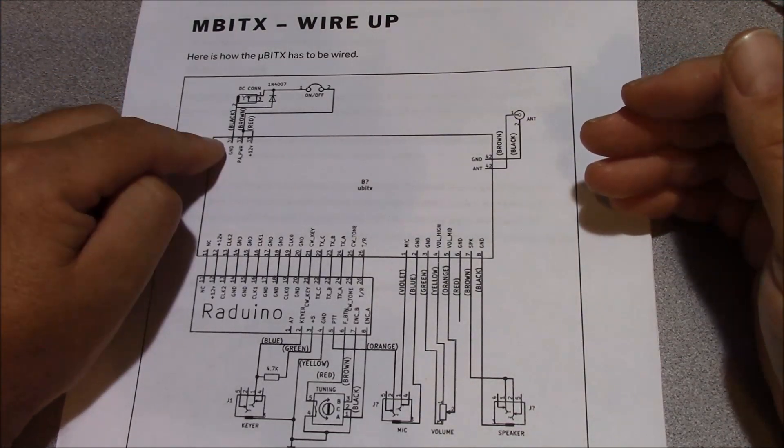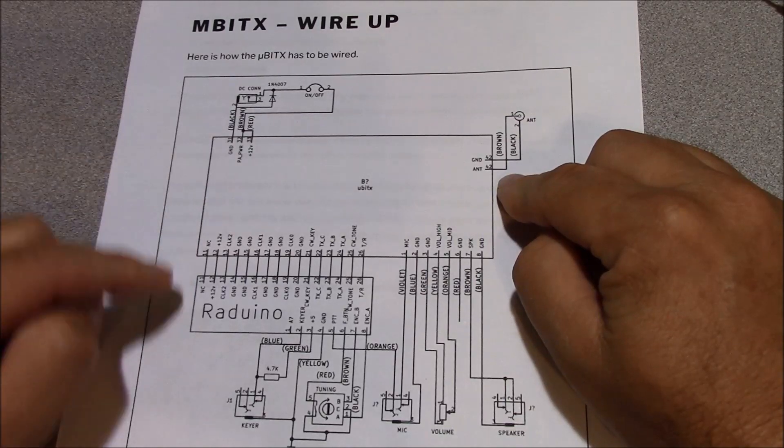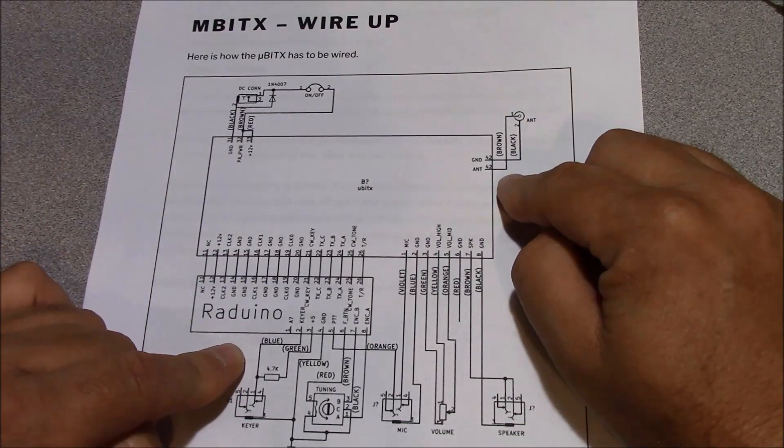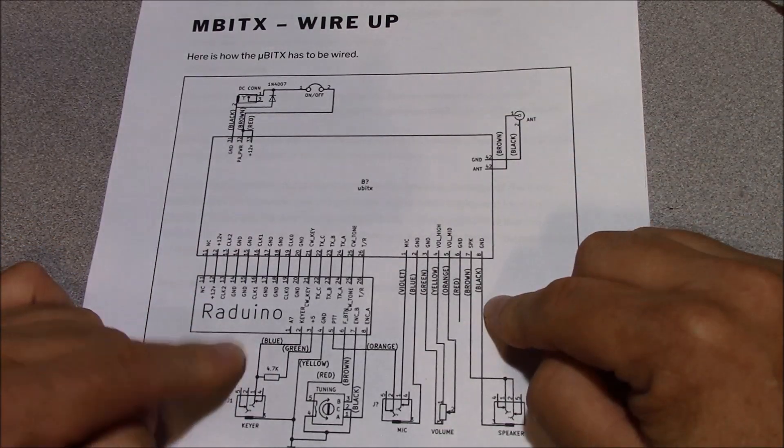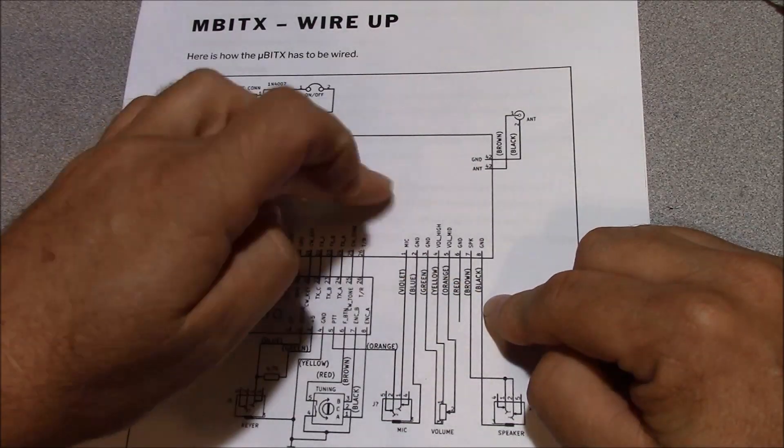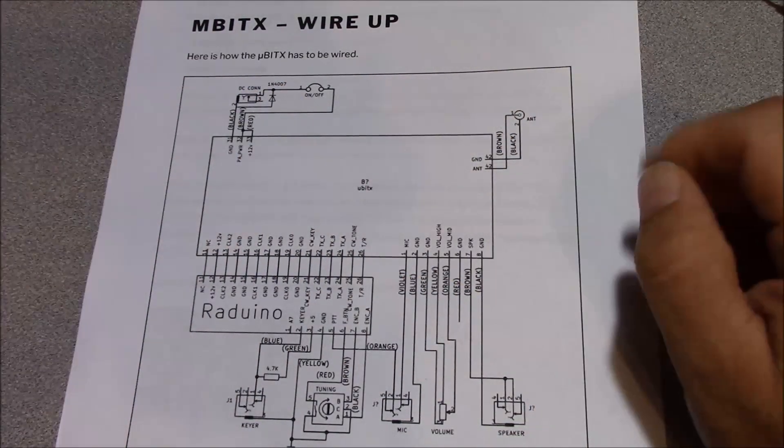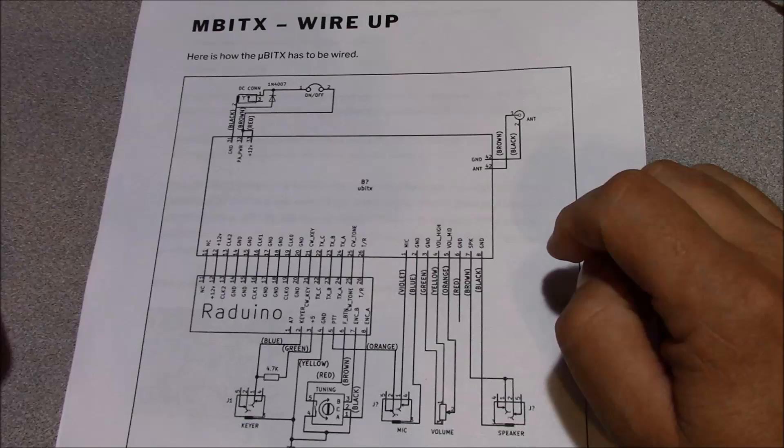There's four connectors. There's a DC connector, there's an RF connector, there's a connector that goes to the Raduino, which I'll call the Logic Connector, and then there's an audio board or an audio connector that goes to the MicroBitX main board itself that controls most of the audio functions.